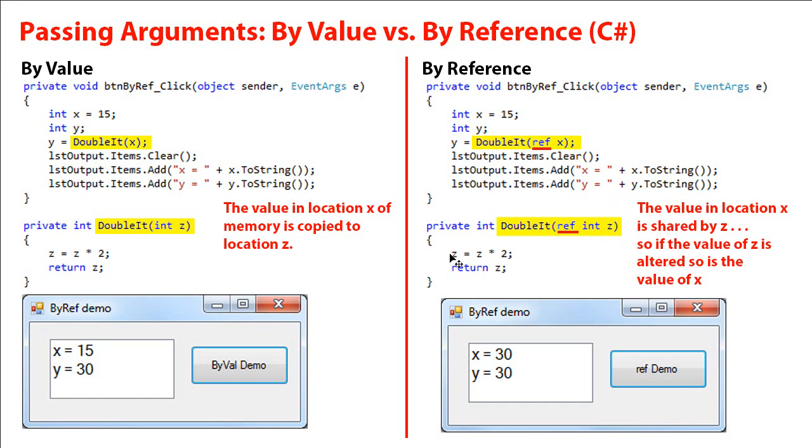And when I double z, I'm doubling x. So I return z. 15 times 2 is 30. Y becomes 30. I'm clearing the list box, but I'm printing out the values of x and y. And they are now both 30.